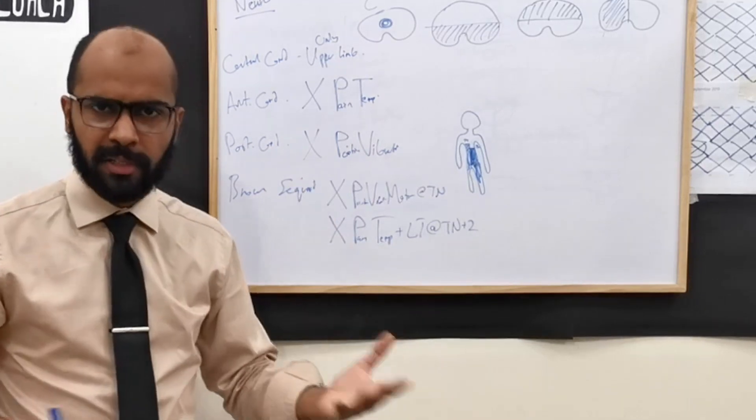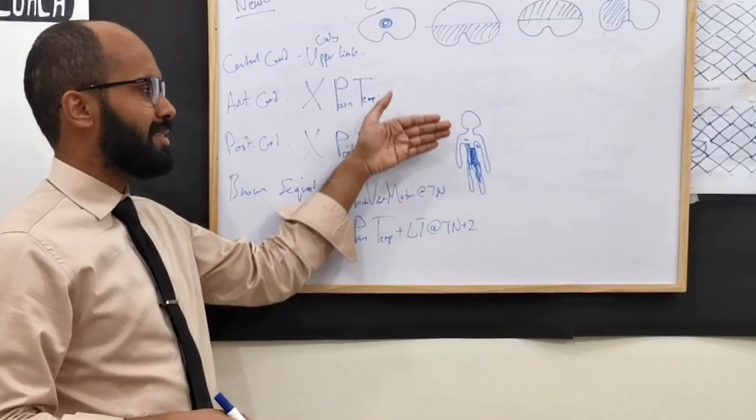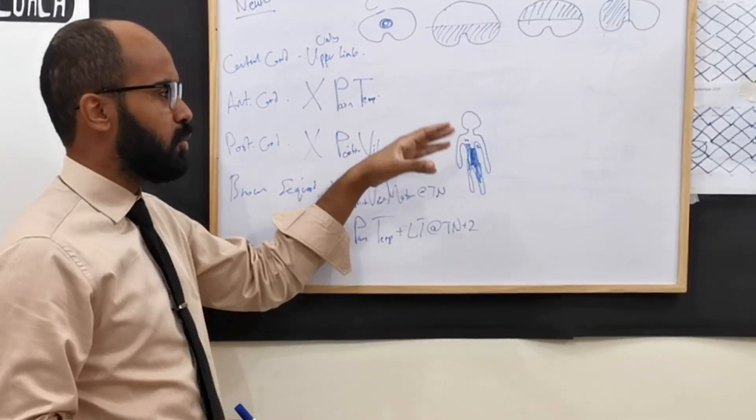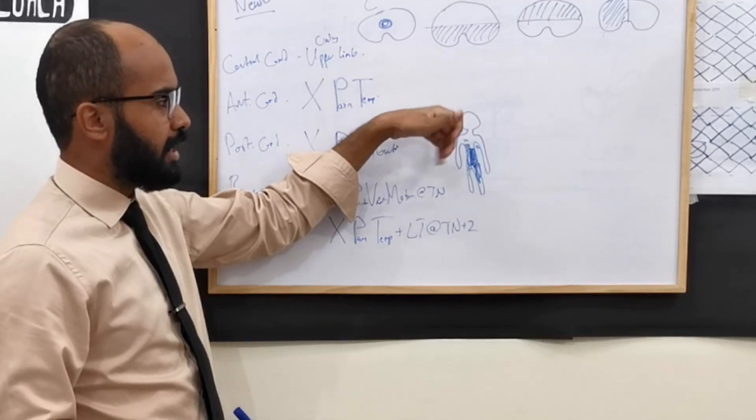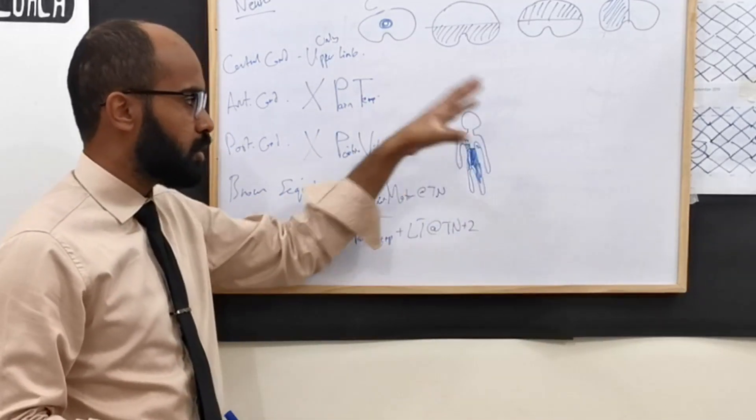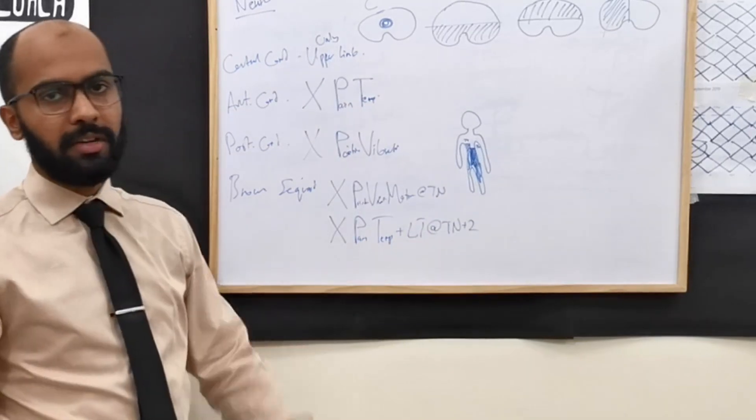Actually, this is the easiest to spot. As soon as there is discrepancy between the level of one unilateral injury and the other unilateral injury, you just think of Brown-Séquard.